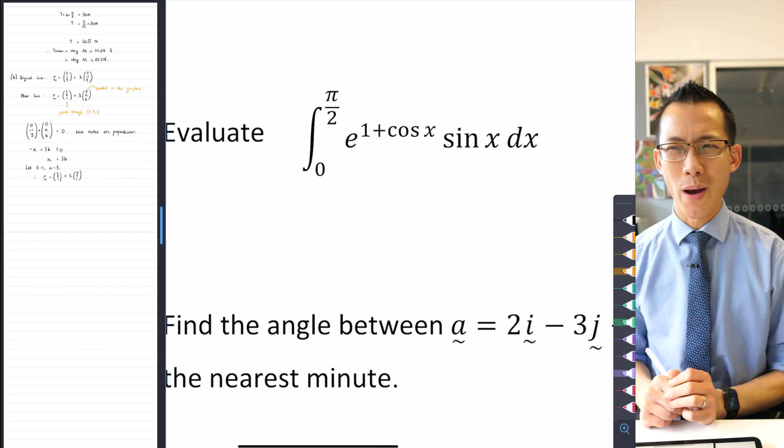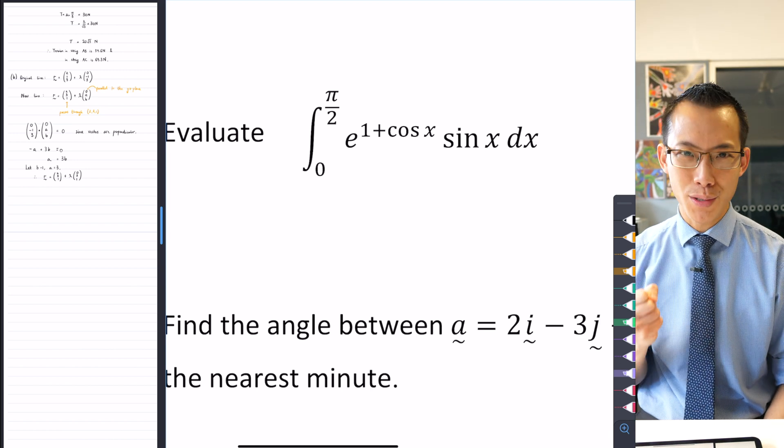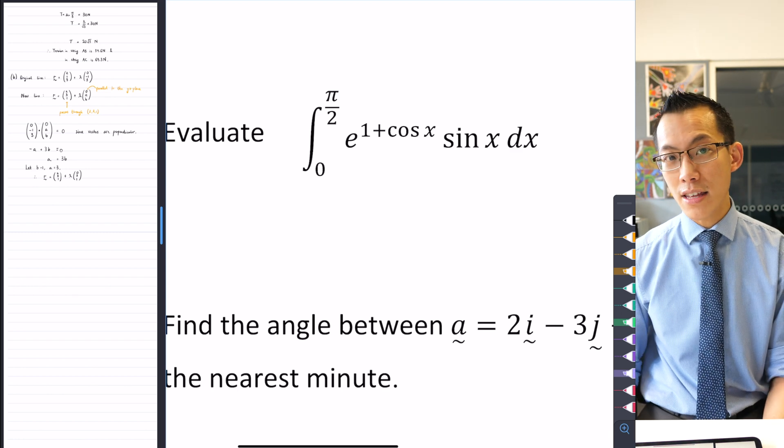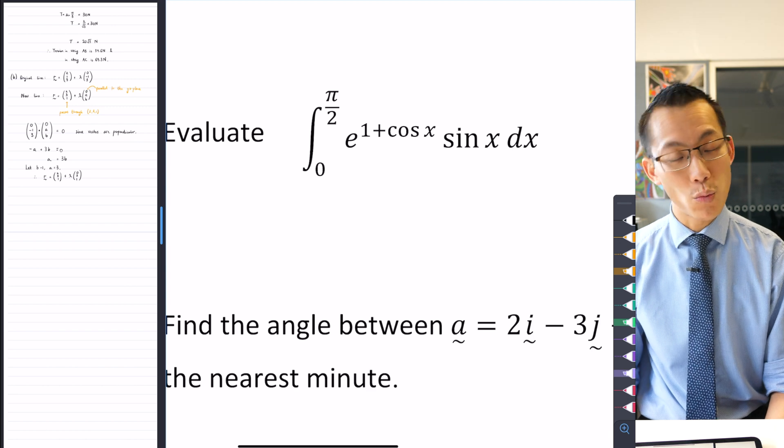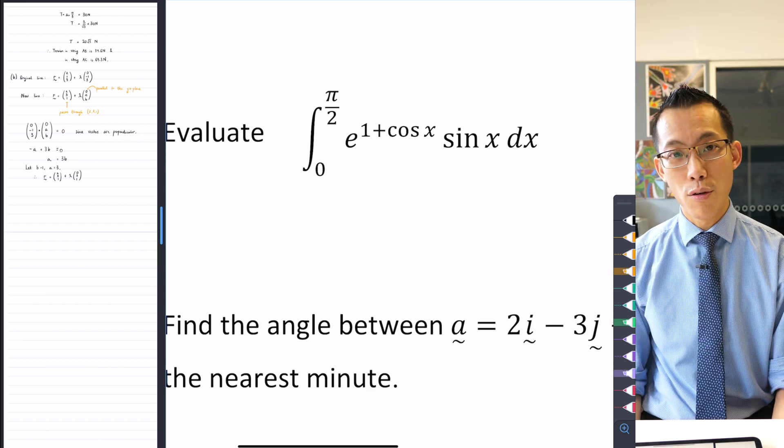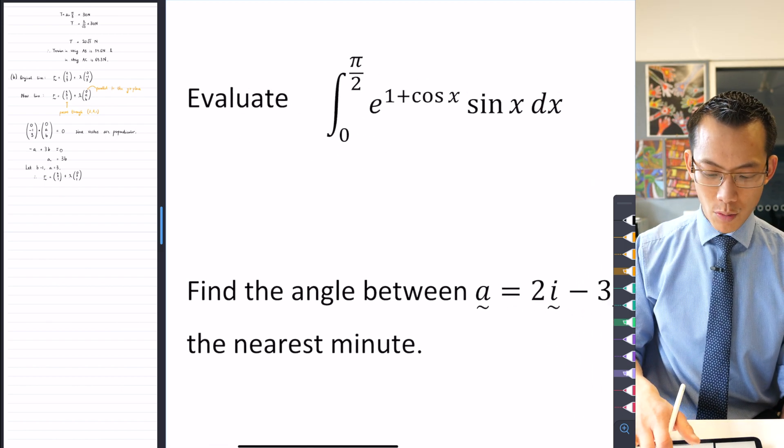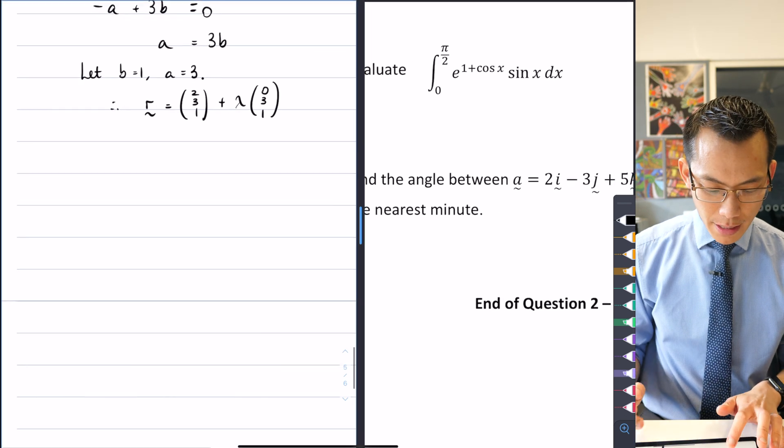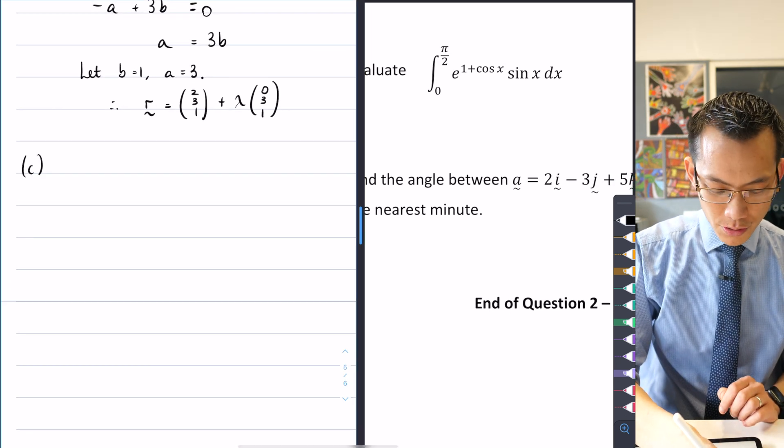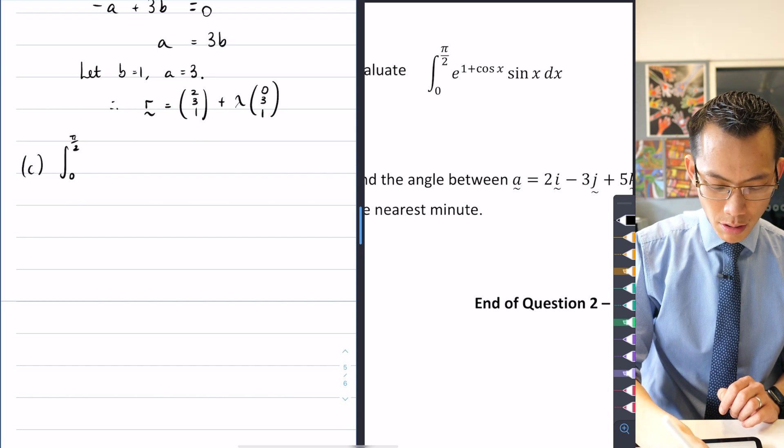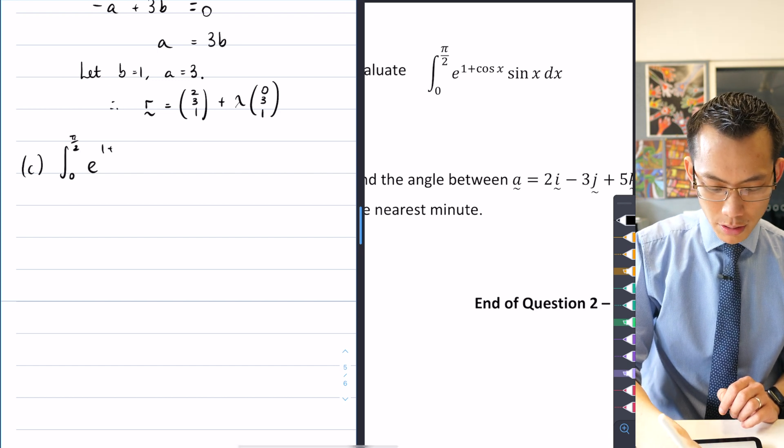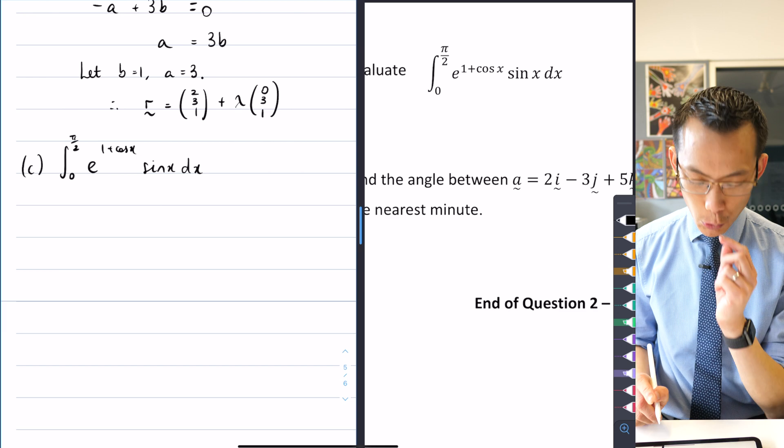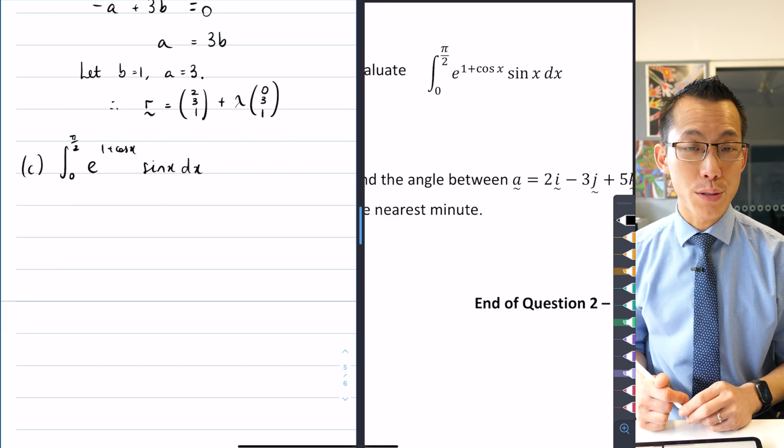It's one of those classic situations where when you're holding a hammer, everything looks like a nail. Even though you're an extension 2 student, in fact, this doesn't require anything much more than extension 1 techniques. This is a classic reverse chain rule question. If we go ahead and write out what this integral looks like, so this is part C: integral from 0 to π/2 of e^(1 + cos x) sin x dx.